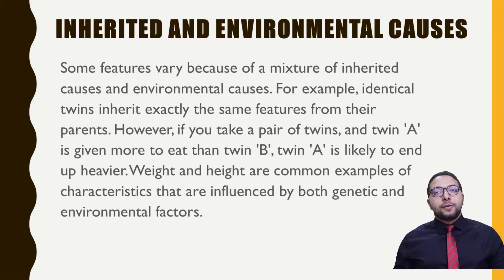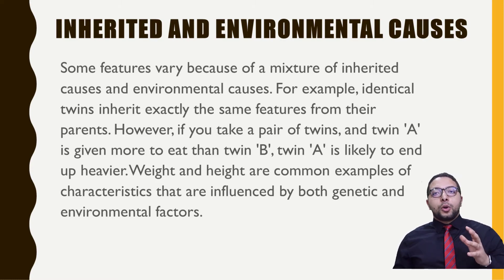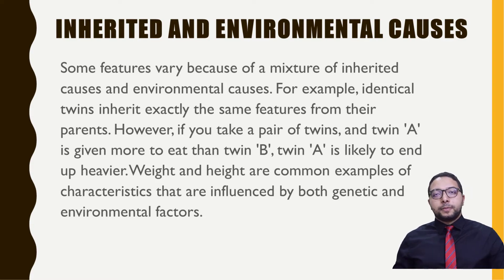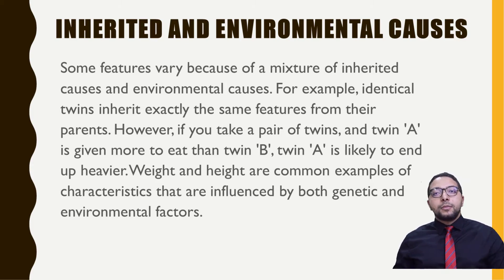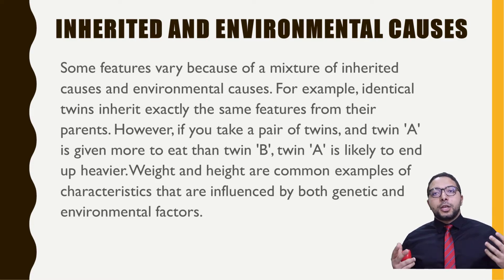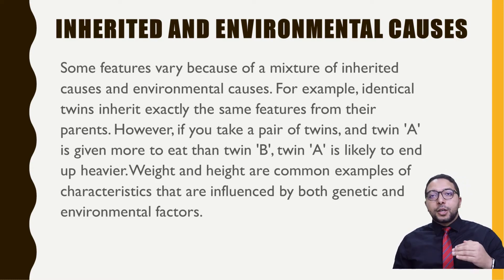To show both factors together — inherited and environmental variation — imagine we have two identical twins, Twin A and Twin B. They carry the same genes from the parent, so there is no inherited variation between them. But if Twin A is exposed to more food, Twin A will develop a heavier and taller body than Twin B. Changing one environmental factor — food — has affected their bodies: one developed a heavier, taller body, while the other developed a slimmer, shorter body.